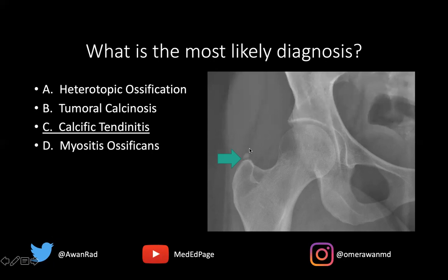Tumoral calcinosis would be a consideration, but that's typically an autosomal dominant rare disease typically seen in African-Americans, where you get much more periarticular calcification. The quantity of it would be much more and not just centered at a tendon, ligament, or bursa.